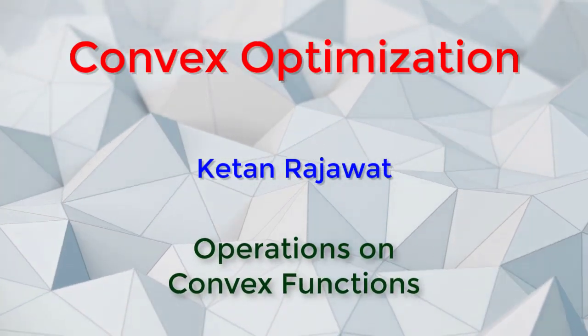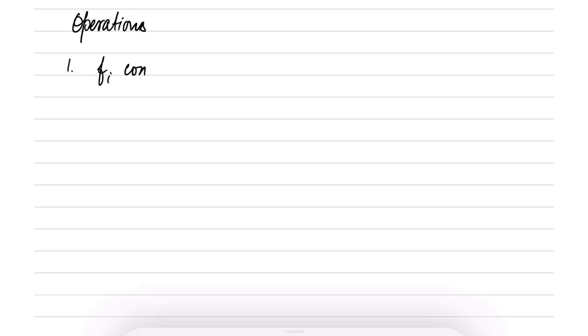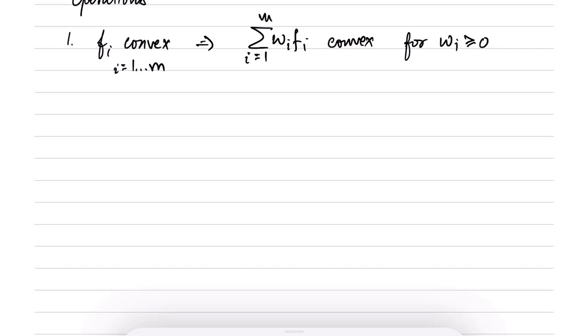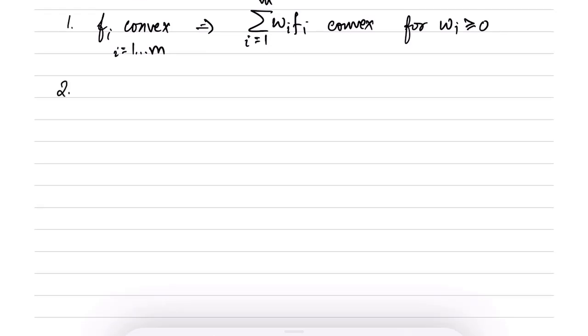Let us look at several operations that preserve convexity. The first is weighted summation: if f_i is convex, then the weighted summation sum_{i=1}^{m} w_i f_i is also convex, provided that the w_i's are greater than or equal to zero. So the non-negative weighted summation is convex, and this is very easy to verify.